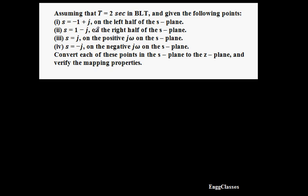Second point: s is equal to 1 minus j. This lies on the right half of the s-plane, because the real part is greater than 0. Third and fourth points have only an imaginary part — no real part. If there is no real part, it lies on the j-omega axis. If it is positive, it lies on the positive j-omega axis; if negative, on the negative j-omega axis.